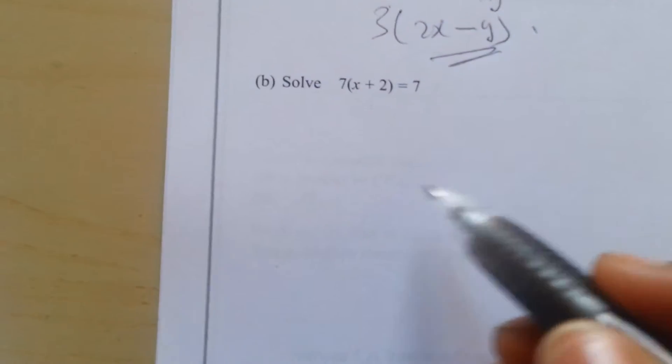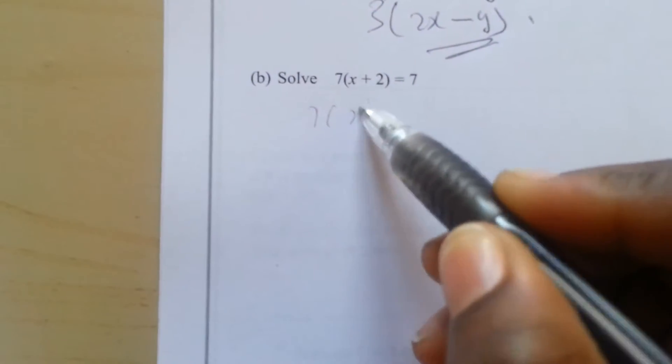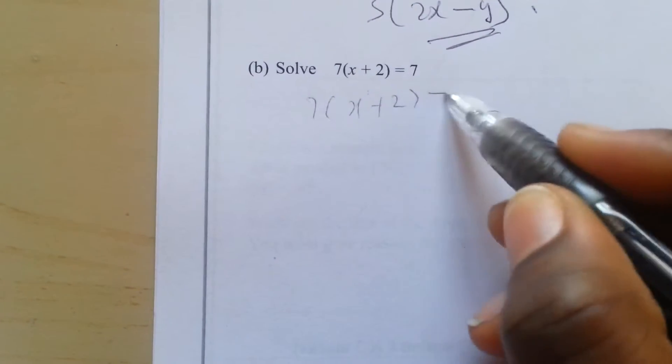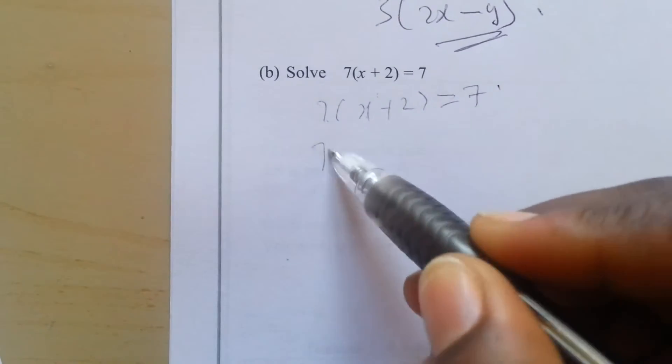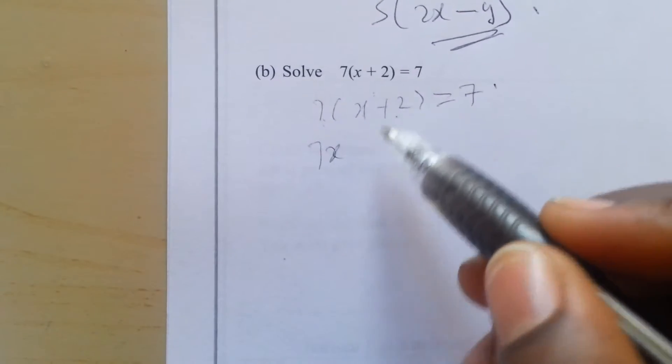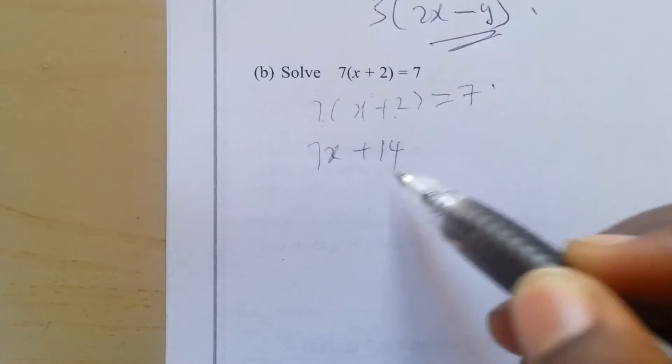Expanding this bracket, you have 7 into x plus 2 equals 7. So 7 times x is 7x, and 7 times 2 is plus 14, then equal to 7.